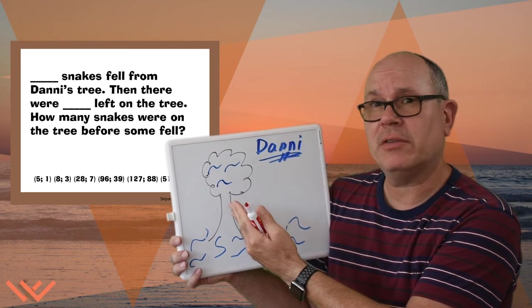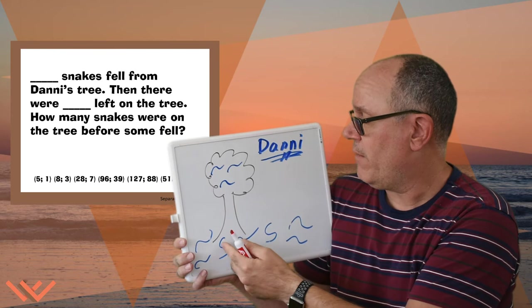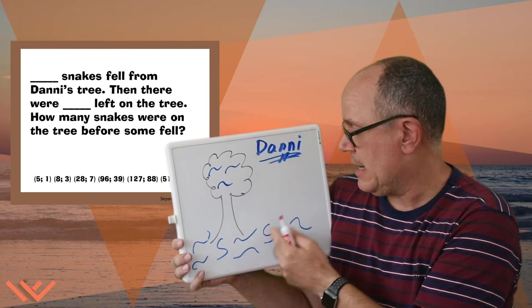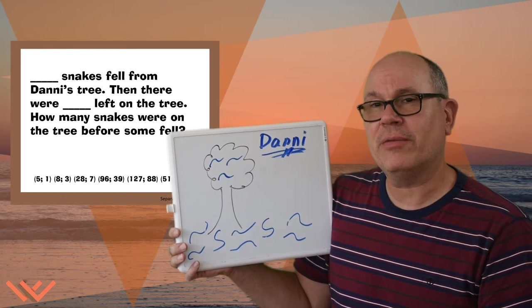Why don't we just count up the snakes? That's easy. One, two, three, four, five, six, seven, eight, nine, ten, eleven. There were eleven snakes in the tree before they fell.